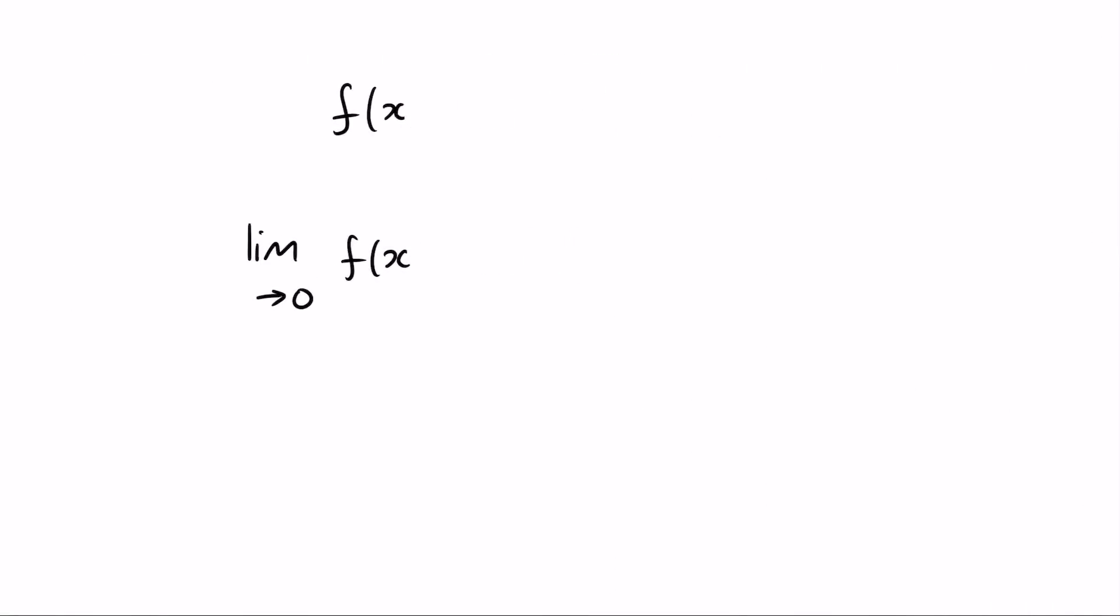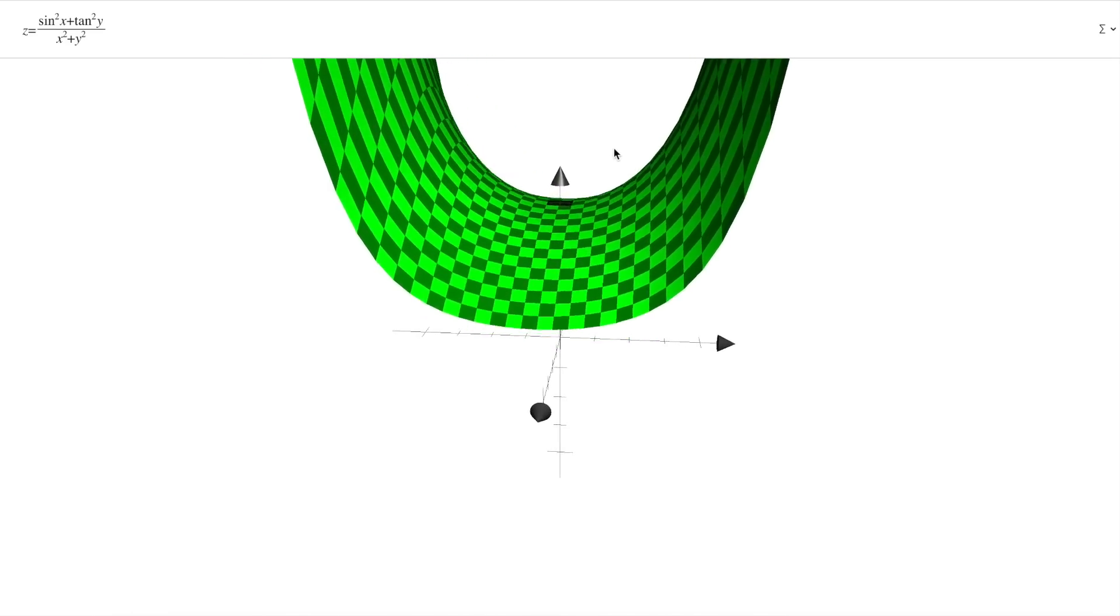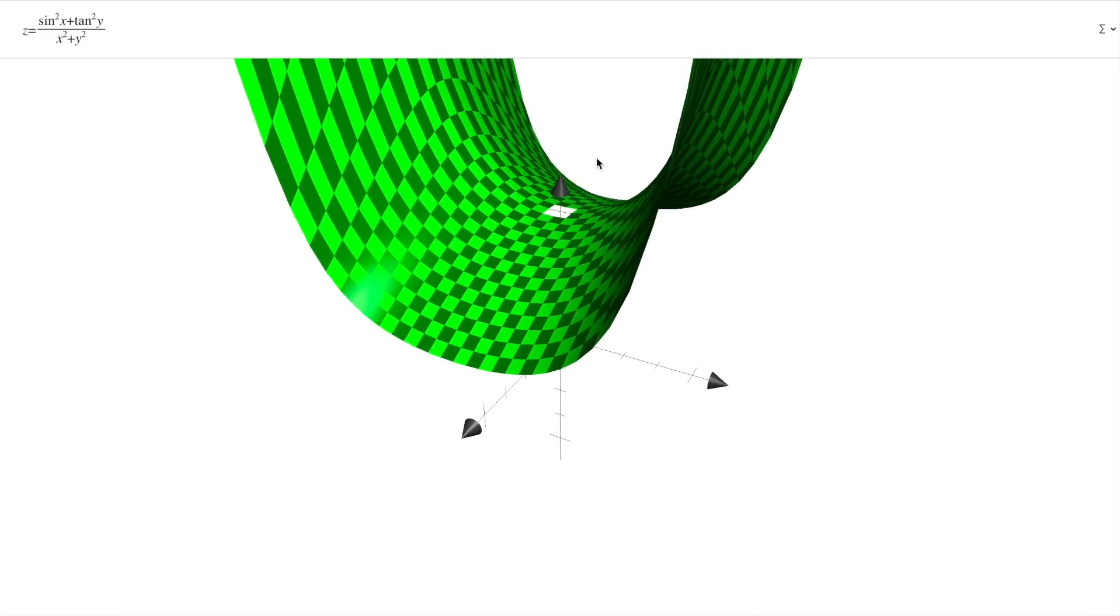We get a similar situation for functions of two variables. Here's a function where the limit does exist, and the limit as x and y both approach 0 is 1. Once again, formalizing this is a bit messy, but you can see from the graph that there's no funny business going on around 0. There is a hole in the middle, which is due to my graphing calculator freaking out when it tries to compute 0 divided by 0. Look, it's trying its hardest, okay?